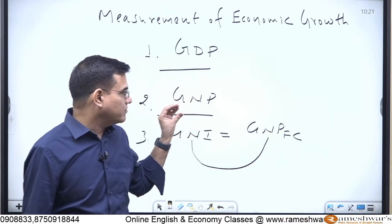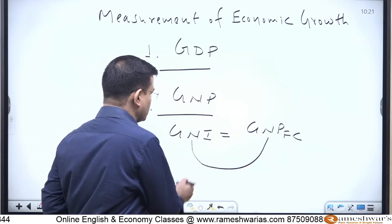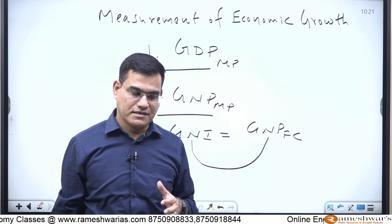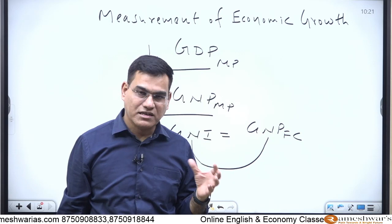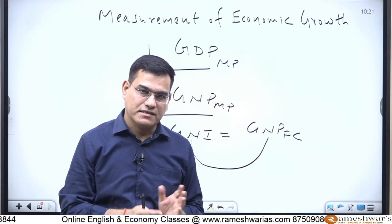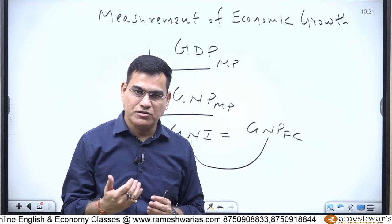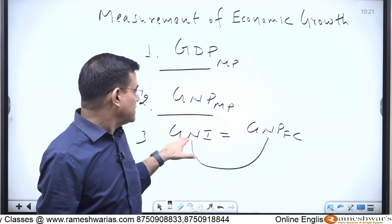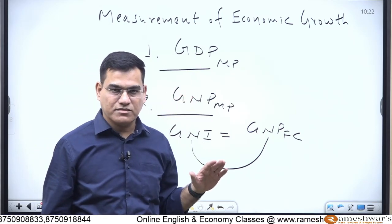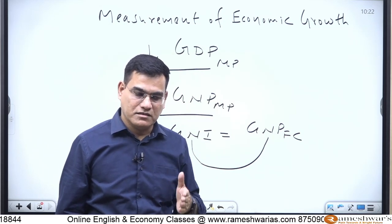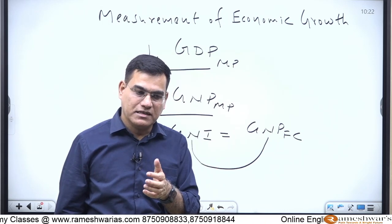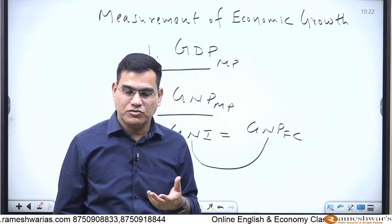GNP — and GDP — when no qualifier is mentioned, are always at market price. At market prices, indirect taxes are included, so they do not show the real income of people, because your GNP or GDP value will be higher by the amount of indirect taxes. Economists say you should use the concept of factor cost. To calculate any item at factor cost, you remove net indirect taxes from the market value, and you get production at factor cost — which represents the income view of workers and factors of production.